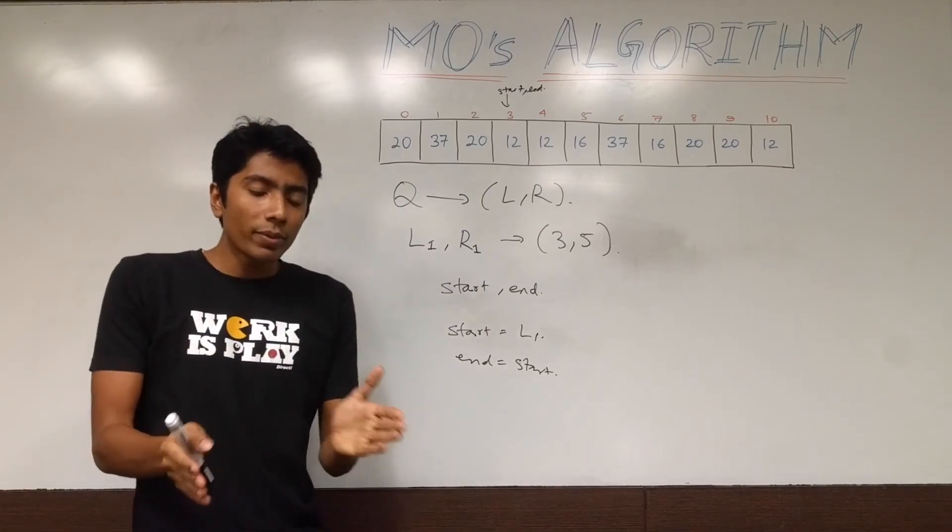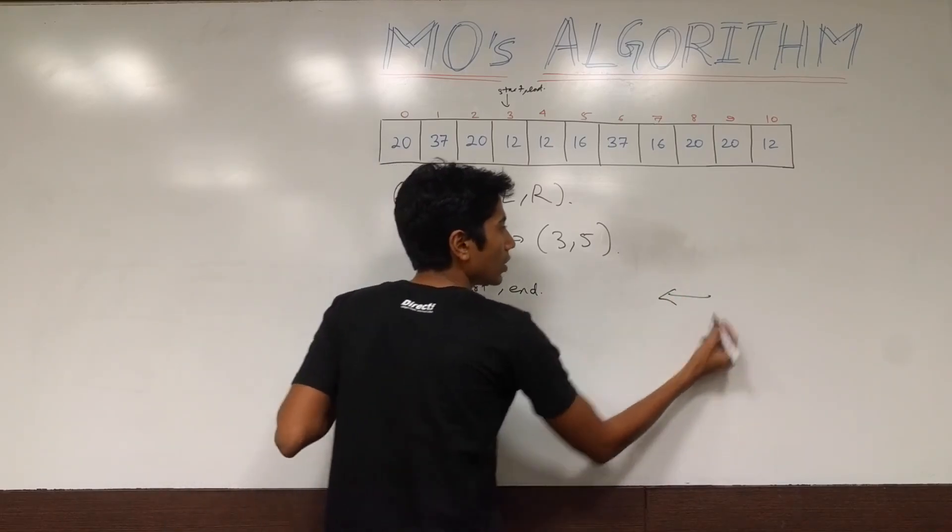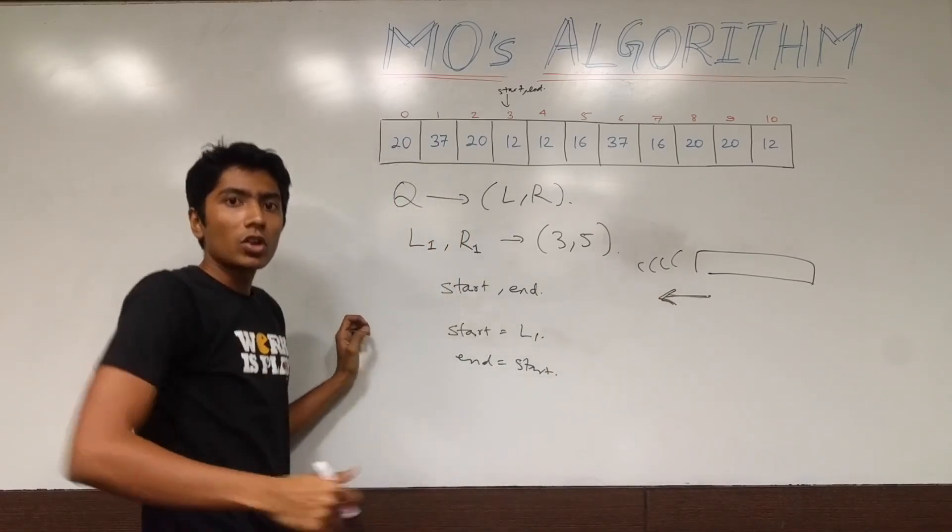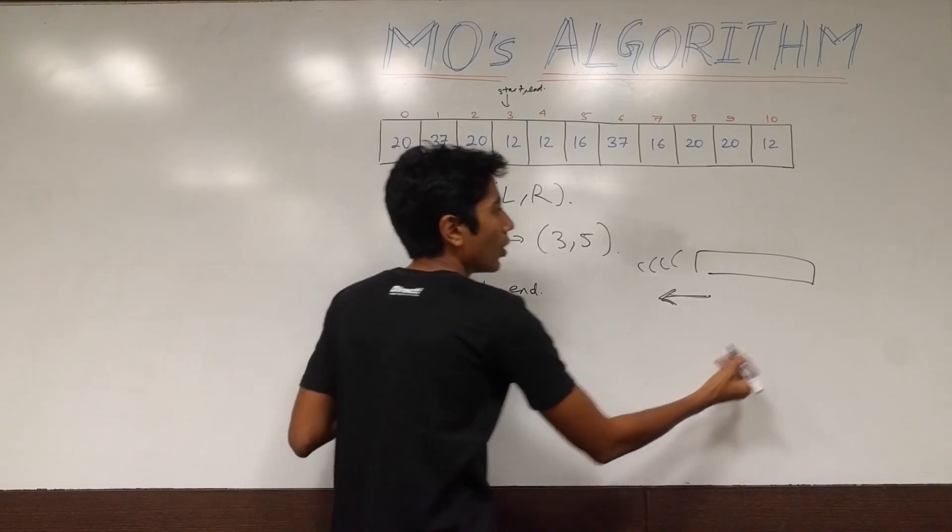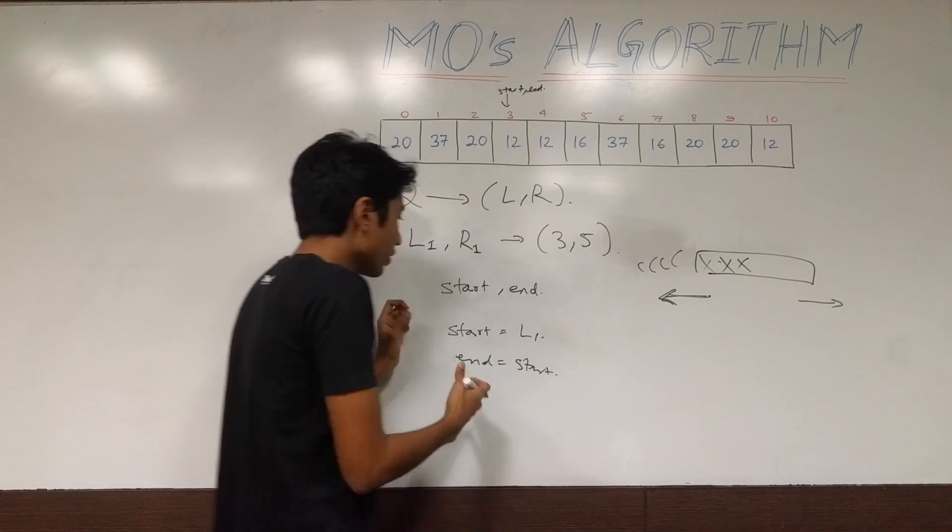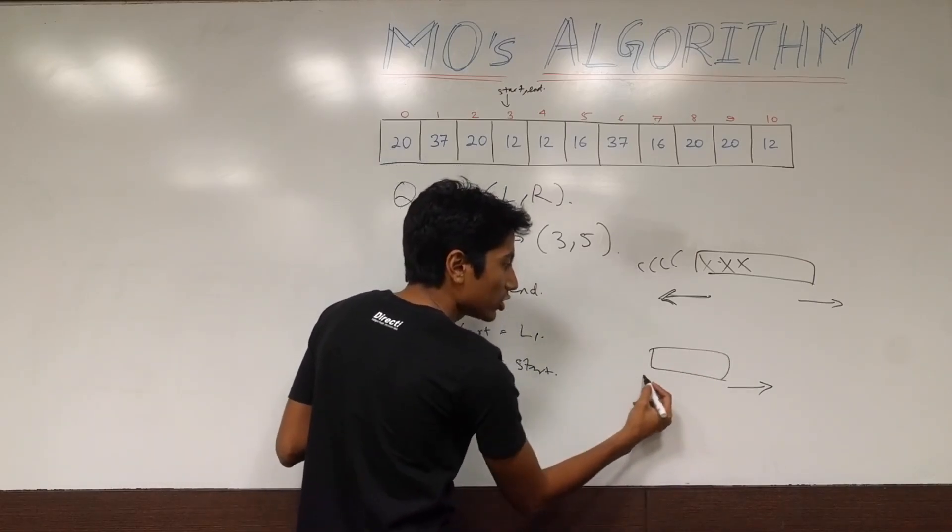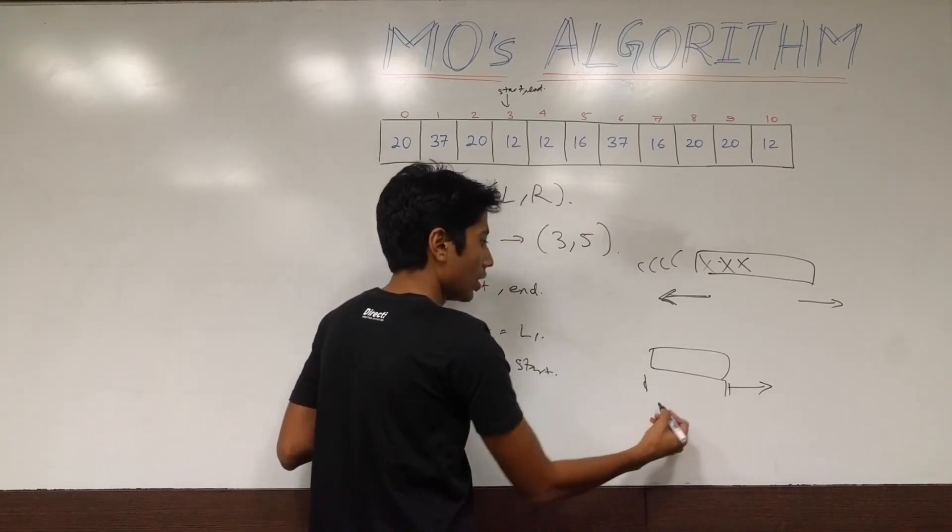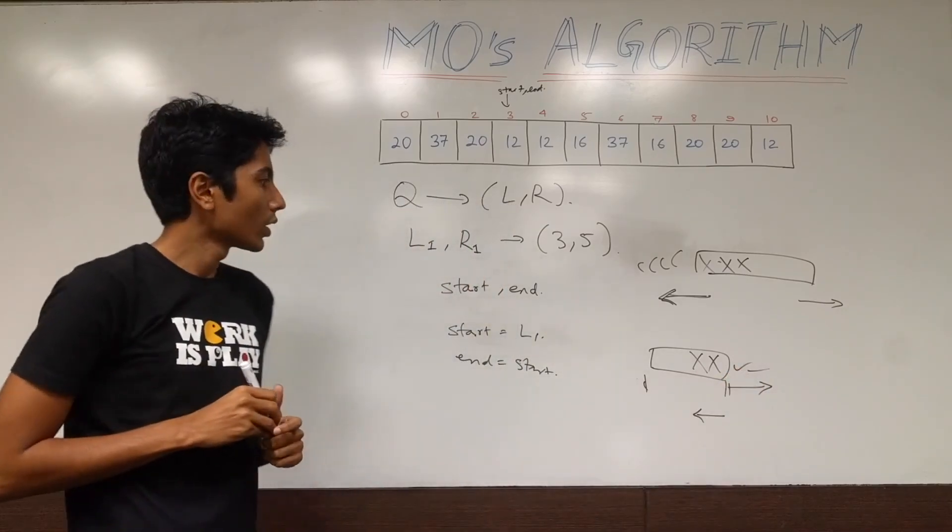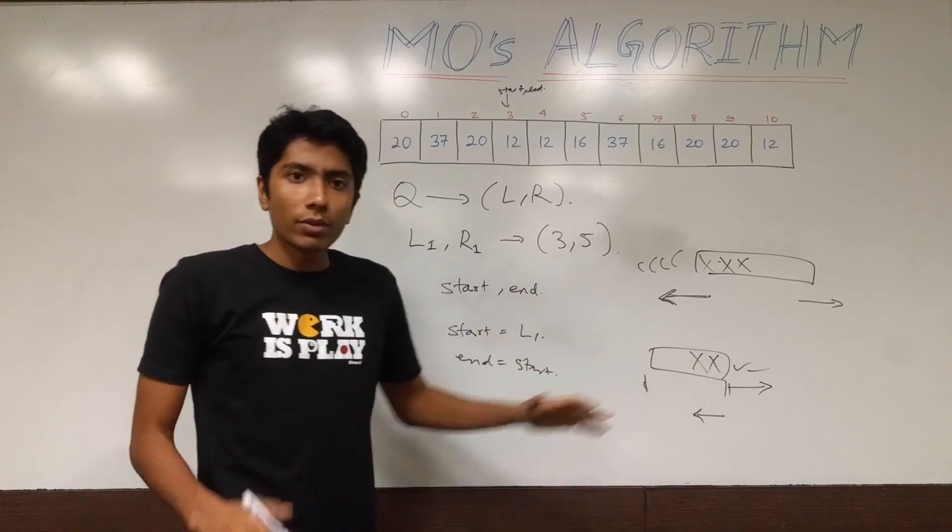Both pointers are pointing here. Now here's the thing. Start is going to be defining the left of your range. So whenever start is moved to the left, this is your original range. If start is moved to the left, it means you are adding elements to your range. So whenever it moves to the left, you add elements to your set. Whenever it goes to the right, you are removing elements from your set.